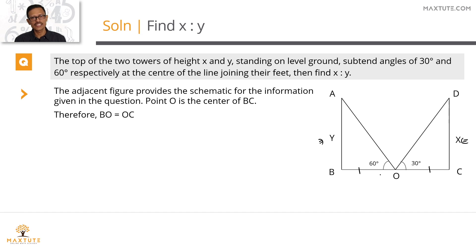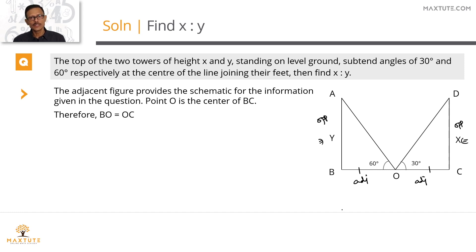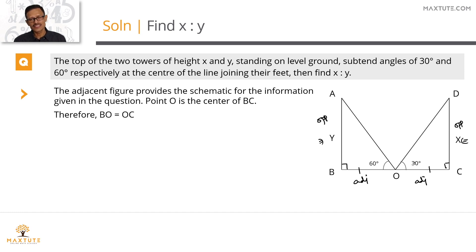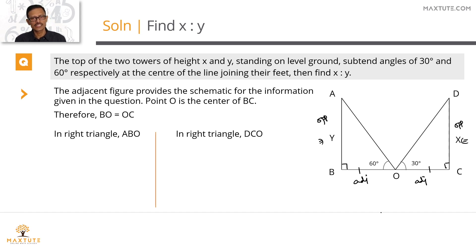Here is a schematic. The towers AB and CD have heights y and x. We find the angles of elevation from O, the midpoint of line BC, so BO = OC. For angle 60°, AB is the opposite side and BO is the adjacent side. For angle 30°, CD is the opposite side and OC is the adjacent side. Since OC = OB, that's sufficient to find the ratio.